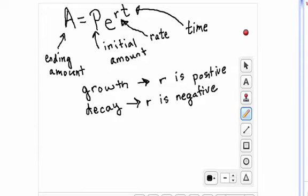When you're dealing with exponential growth or decay problems, you need to use this formula. A equals P times E raised to the RT power.